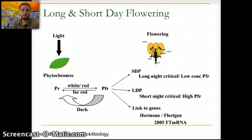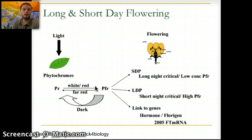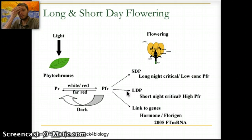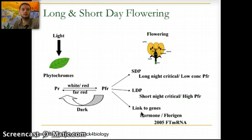Long-day flowering plants are essentially the opposite. A long day causes the accumulation of lots of PFR because the pigment absorbs lots of light, converting PR to PFR. In long-day flowering plants, a short night is critical, which causes a high concentration of PFR. These responses have been linked to two specific genes, and we'll outline this more in class as an introduction to what causes flowering based on the amount of light.